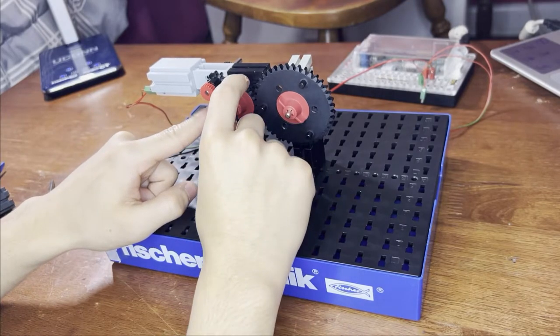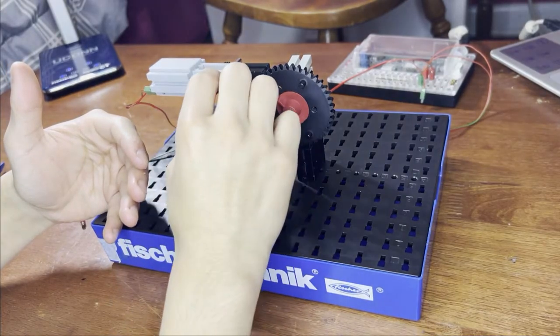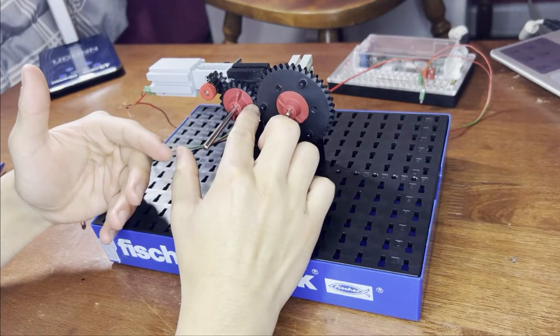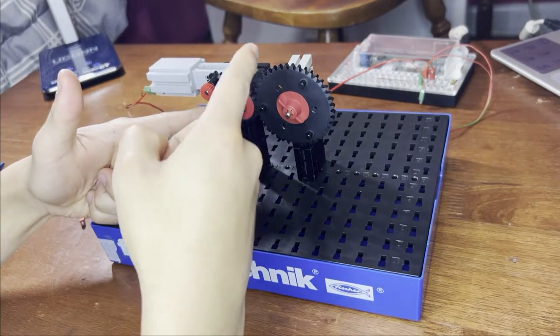And the interesting thing about the idler gear is that the number of teeth it has actually doesn't matter. It really just only transfers the movement of the teeth, because as five teeth go down here, that means five teeth are going to go up here.